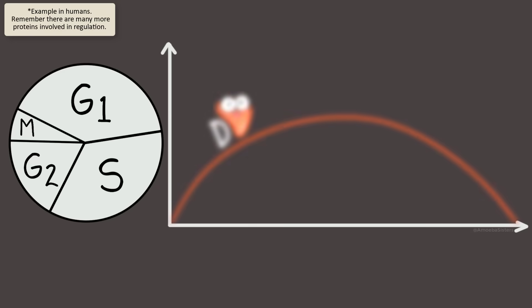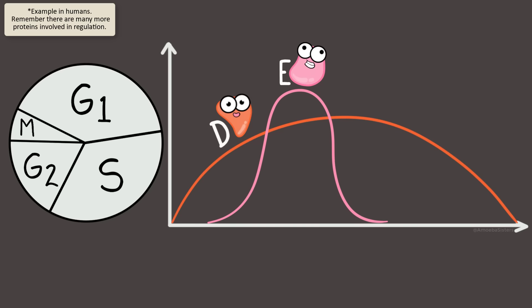CDK can have different forms of cyclin protein bound to it. Different types of cyclin rise and fall throughout the cell cycle, and the rising and falling is based on a variety of signals to determine when the cell should move on to the next cell cycle phase.